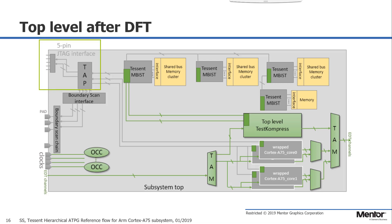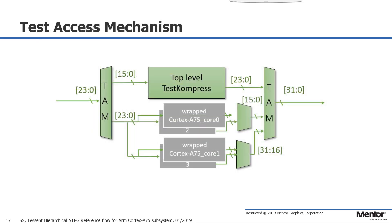One of the key features here is our test access mechanism. This is a very flexible solution to address I/O sharing between different scan modes, including core-level modes accessing top-level pins. Here I am sharing top-level ATPG mode with two groups of Cortex core ATPG channels. I can configure top-level test channels to either connect to top-level test compressed logic, or to connect to core 0 and core 1, or core 2, or core 3.